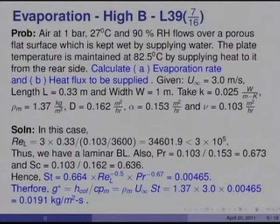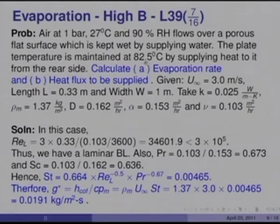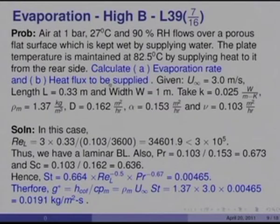The third problem — evaporation, a case of high B. Air at 1 bar and 27°C and 90% RH flows over a porous flat plate kept wet by supplying water. The plate temperature is to be maintained at 82.5°C. Calculate the evaporation rate and the heat flux to be supplied from the rear side of the plate.